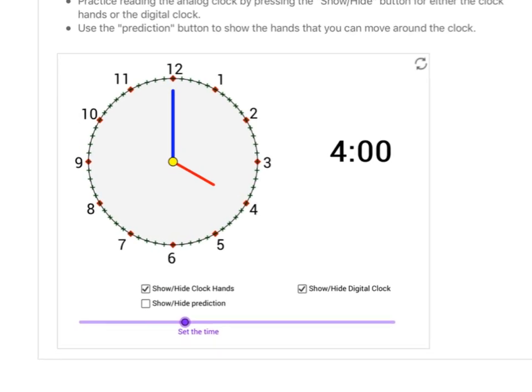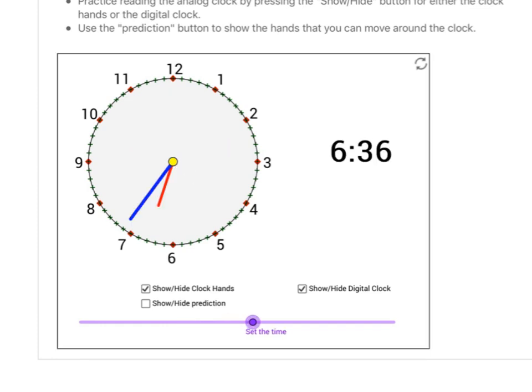So anyway, we've got our clock. And now, parents and teachers, at this point in the game, we can hide the hands. We can show a particular time, and then have our students predict where will the hands go.